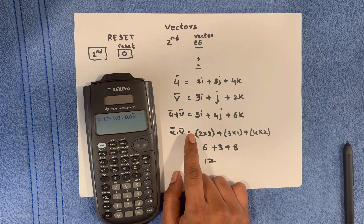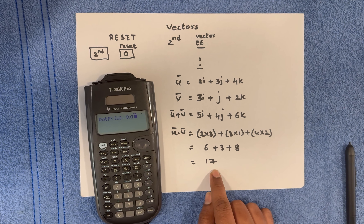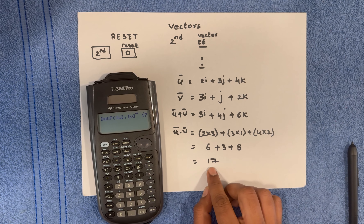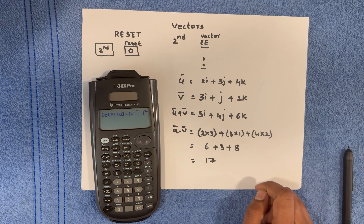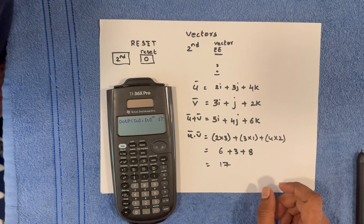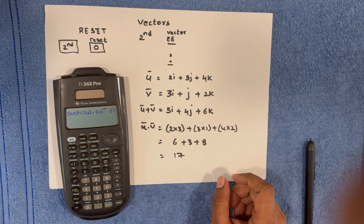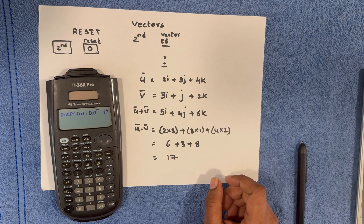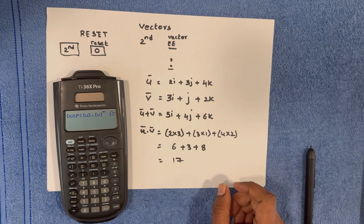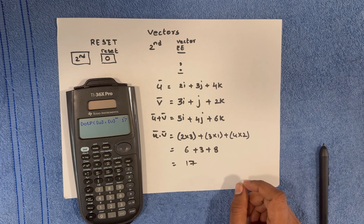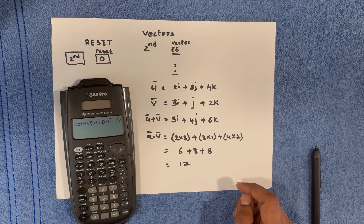The dot product of vectors U and V gives a value of 17. We can verify this: manually calculated we got 17, and the calculator also shows 17. Using this method, we can perform all vector operations — dot product, cross product, magnitude, sum, and subtraction — directly on the calculator, even without knowing the formulas. This saves time during exams. I hope this video helps you.